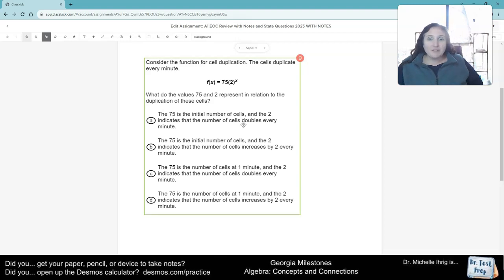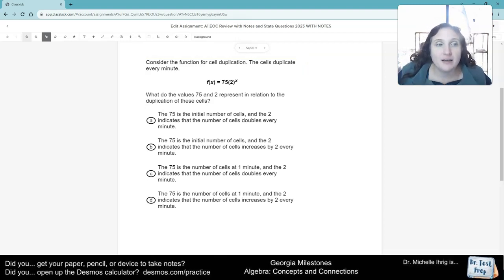So if we have this function, 75 times the quantity 2 to the x, what do the 75 and 2 to the x mean? Well, we've already talked about it a lot. This 75 is our initial starting value when x is zero. Because anything to the zero power is 1. 75 times 1 is 75.